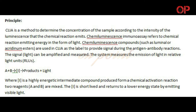Principle. CLIA is a method to determine the concentration of the sample according to the intensity of the luminescence that the chemical reaction emits. Chemiluminescence immunoassay refers to a chemical reaction emitting energy in the form of light. Chemiluminescence compounds, such as luminal or acridinum esters, are used in CLIA as the label to provide signal during the antigen-antibody reactions.